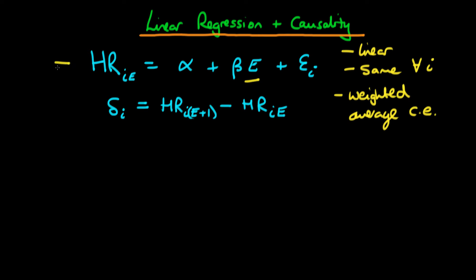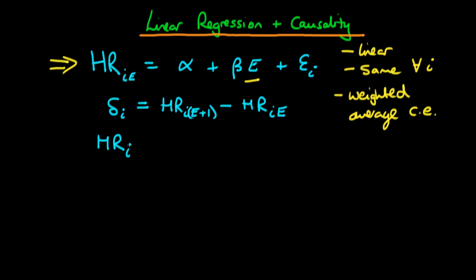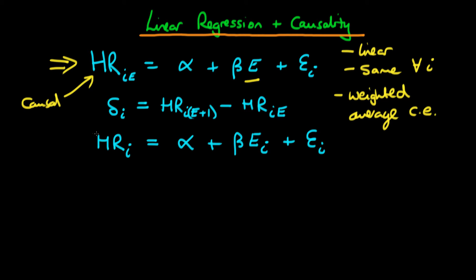From the potential outcomes model, we can derive the model which we actually observe. The observed level of resting heart rate for individual I is equal to alpha plus beta times their actual exercise level E_I, plus the error term epsilon_I. Because I've assumed the top model is causal and the bottom model is derived from it simply by substituting E_I, this bottom model also has a causal interpretation.